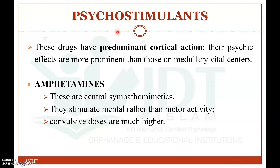The next group is psychostimulants. These are drugs with predominant cortical action, and their psychic effects are more prominent than their effects on medullary vital centers. An important drug in this classification is amphetamine, a centrally acting sympathomimetic drug. Amphetamine stimulates mental rather than motor activity, and the convulsion dose is much higher, making it safer than the convulsant CNS stimulants.